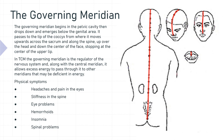The governing meridian begins in the pelvic cavity, then drops down and emerges below the genital area. It passes to the tip of the coccyx, from where it moves upwards across the sacrum and along the spine, up over the head, and down the center of the face, stopping at the center of the upper lip. In traditional Chinese medicine, the governing meridian is the regulator of the nervous system and, along with the central meridian, it allows excess energy to pass through it to other meridians that may be deficient in energy. The physical symptoms associated with governing meridian imbalance are headaches and pain in the eyes, stiffness in the spine, eye problems, hemorrhoids, insomnia, and spinal problems.